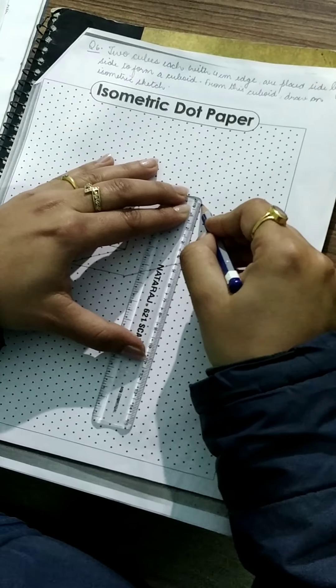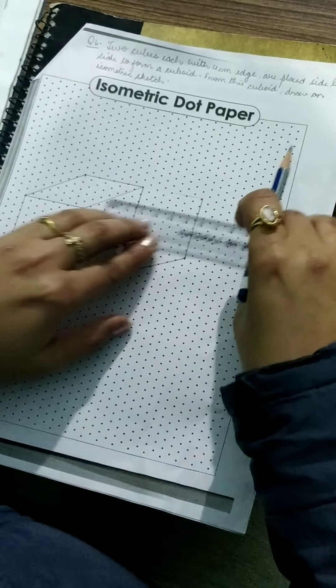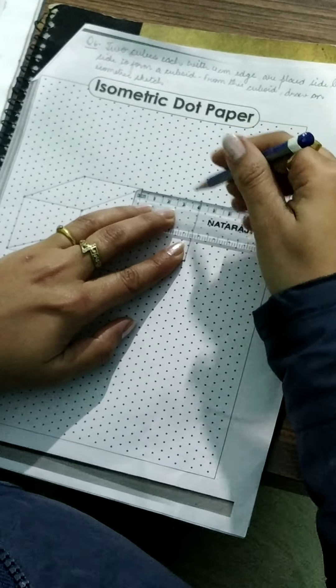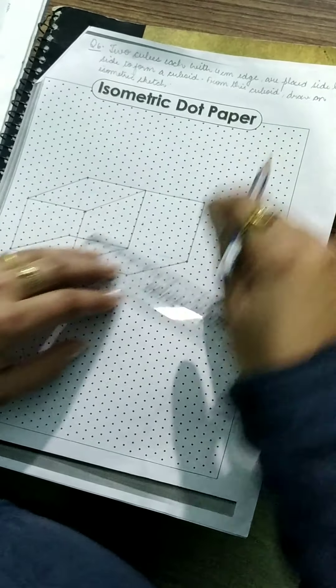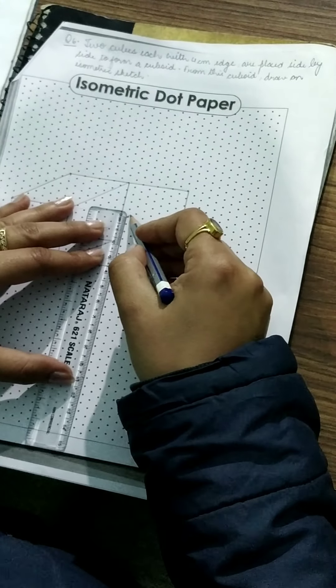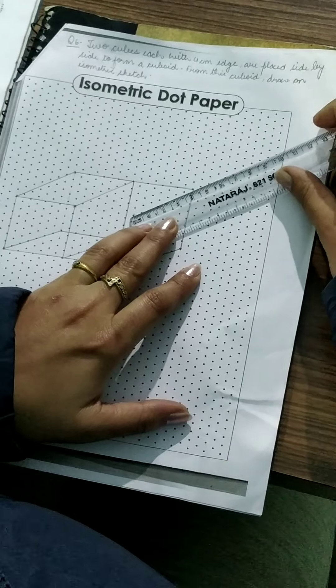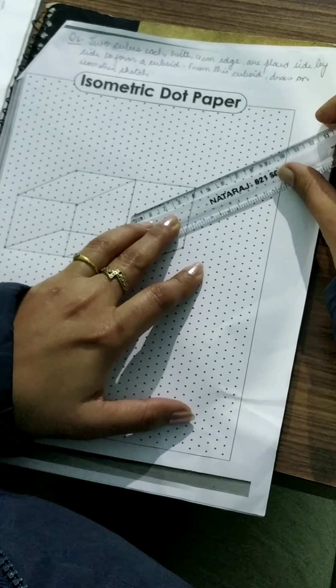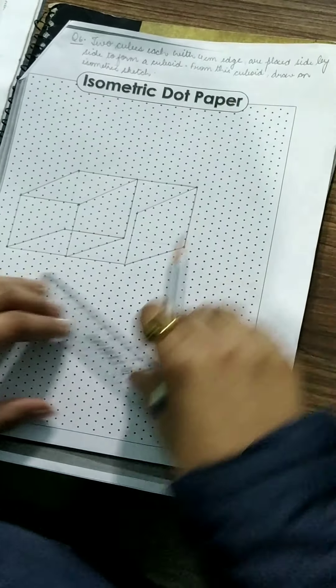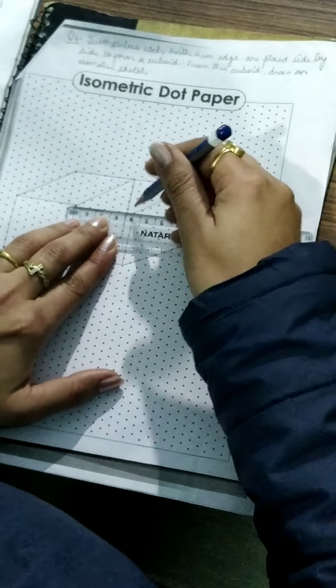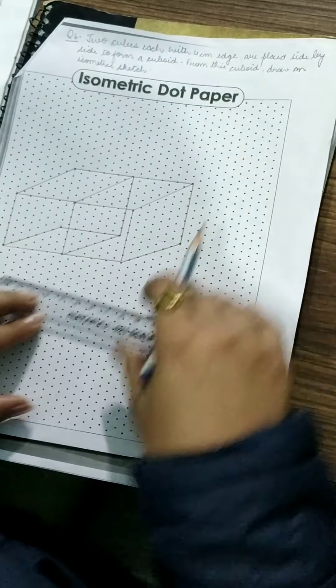All the lines should be 4 cm only. Like this and then a cube over here. This line also it should be 4 cm and if you will draw this line this will be also 4 cm.